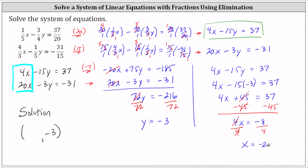This indicates the solution is x equals negative 2 and y equals negative 3, which as an ordered pair is negative 2 comma negative 3.